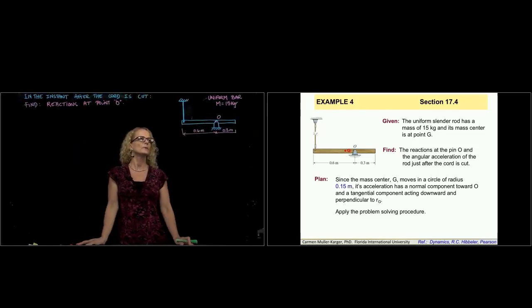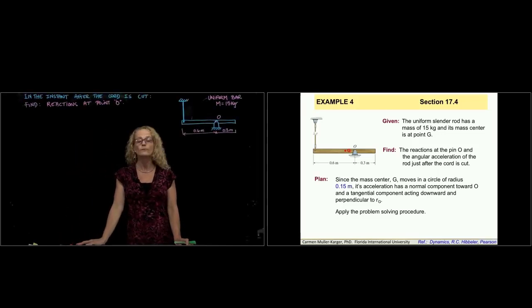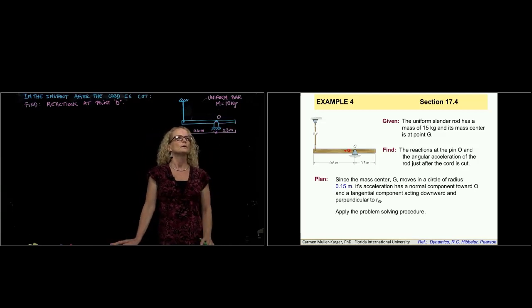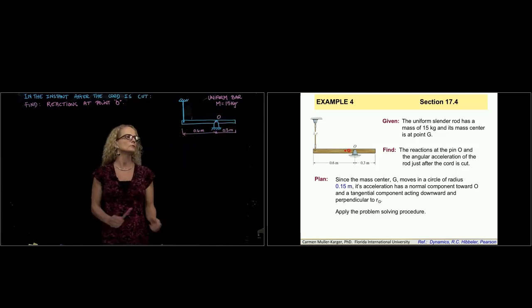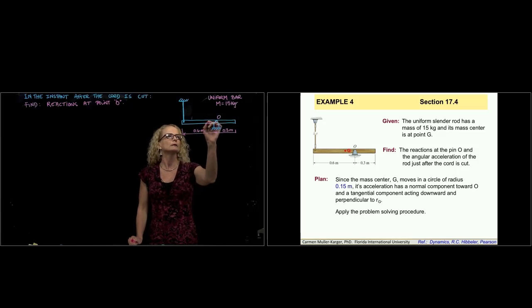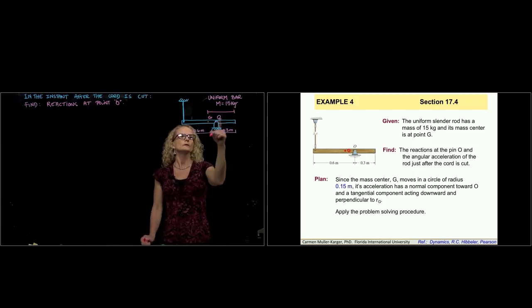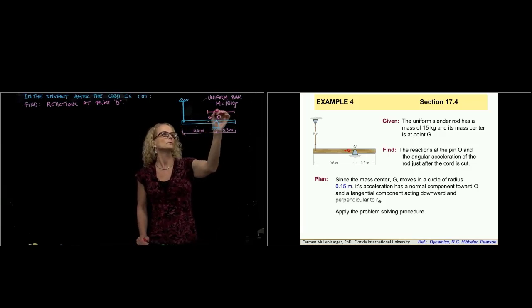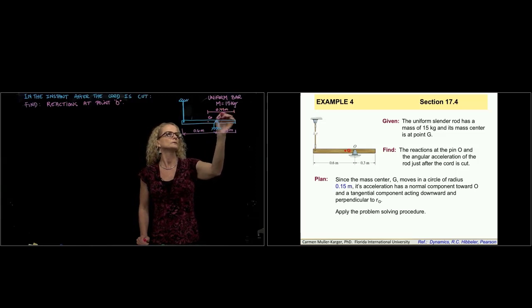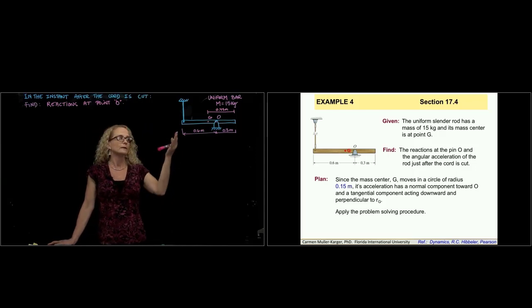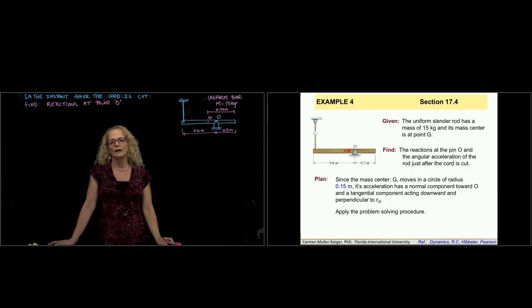Hi. This is problem number 4 from section 17.4. Here we have a uniform bar of mass 15 kilograms. Since it's a uniform bar, the center of gravity will be in the middle. If this is 0.6 meters and 0.3, that's 0.9, so it will be 0.45 meters. Then we can locate the center of mass. That's where the weight is going to be located in our free body diagram.